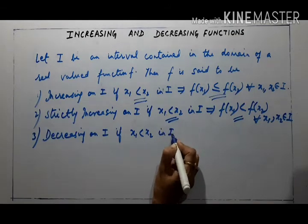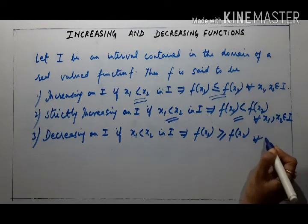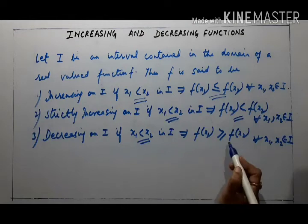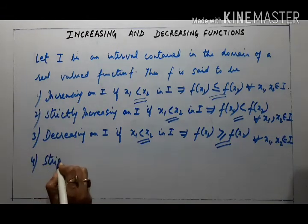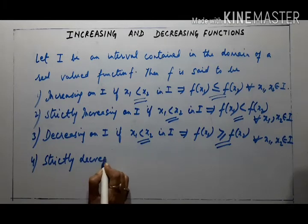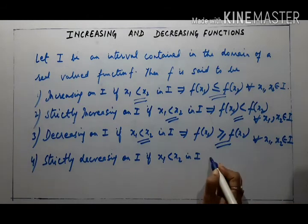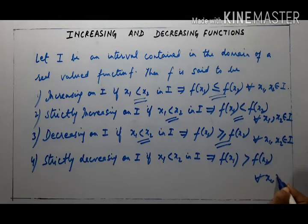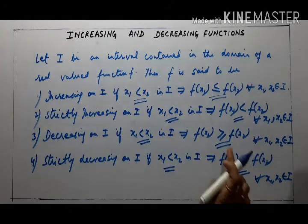Third, decreasing on I: if x1 < x2 in I implies f(x1) ≥ f(x2) for all x1, x2 belonging to I. So in decreasing, if x1 < x2 then f(x1) becomes greater than or equal to f(x2). And similarly, strictly decreasing on I: if x1 < x2 in I implies f(x1) > f(x2) for all x1, x2 belonging to I. So if x1 < x2 then f(x1) > f(x2) — no equal to, unlike decreasing.